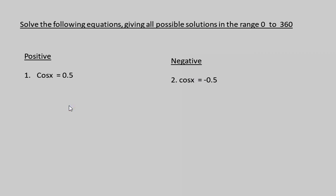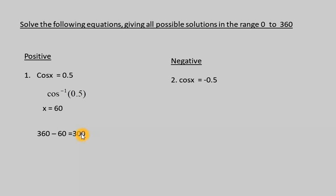For the positive case, cos x = 0.5: first find cos⁻¹(0.5) using a calculator, which gives 60°. To find the second solution, use 360° - 60° = 300°. You can verify: cos 300° = 0.5. So in the positive case, the solutions are x = 60° and x = 300°.